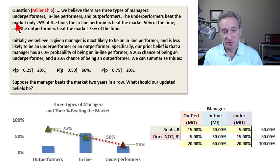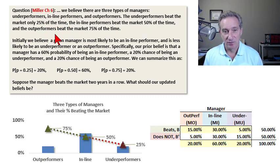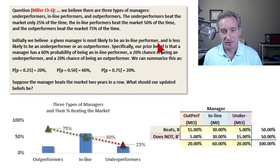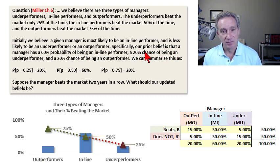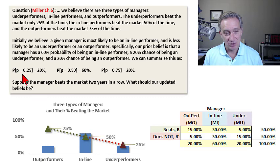Here's the problem statement. We believe there are three types of managers: underperformers, inline performers, and outperformers. The underperformers beat the market only 25% of the time, the inline performers beat the market 50% of the time, and the outperformers beat the market 75% of the time. Our prior belief is that a manager has a 60% probability of being an inline performer, a 20% chance of being an underperformer, and a 20% chance of being an outperformer.